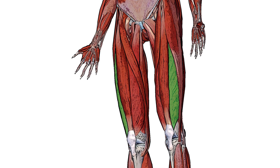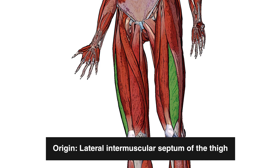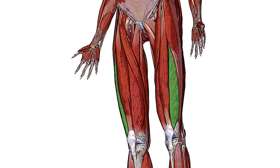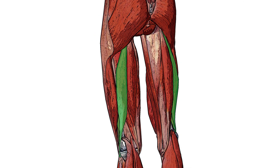Highlighted in green is the vastus lateralis, illustrating our next point of origin: the lateral intramuscular septum of the thigh. This is a deep fold of fascia between the vastus lateralis and the biceps femoris. Highlighted in green here is the biceps femoris muscle, next to it the vastus lateralis, and just lateral to that the iliotibial band.